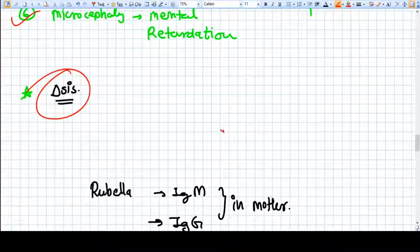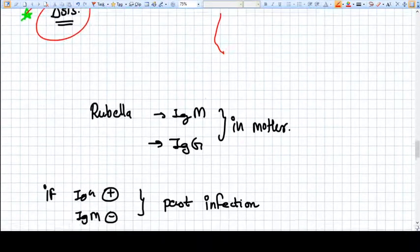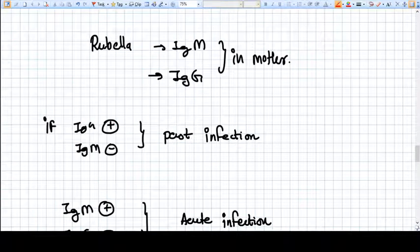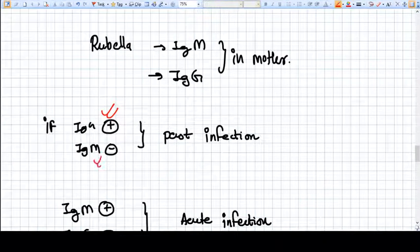Now, if both antibodies, in mother, if IgG is positive and IgM is negative, that means there is no acute infection. IgG is positive means the patient has been infected in past, but now has developed IgG, the patient is immune, so we have lower risk of having congenital rubella syndrome.